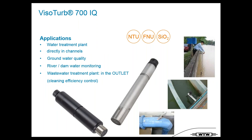The Visoturb sensor is used for turbidity measurement. It can be used in wastewater treatment plants directly in the channels, for groundwater monitoring, and river and dam measurement. A typical application in wastewater treatment is placing it in the outlet to verify cleaning efficiency.